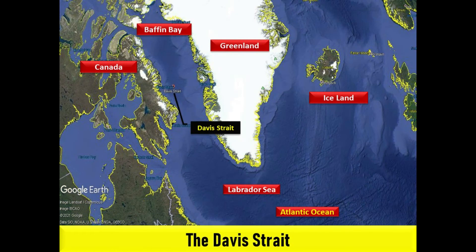The Davis Strait is a northern arm of the Atlantic Ocean that lies north of the Labrador Sea. It connects the Labrador Sea and Atlantic Ocean in the south with Baffin Bay to the north. It lies between mid-western Greenland and Baffin Island in Nunavut, Canada. The strait was named for the English explorer John Davis, 1550 to 1605, who explored the area while seeking a north-west passage. By the 1650s it was used for whale hunting.